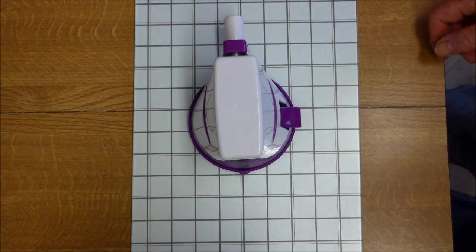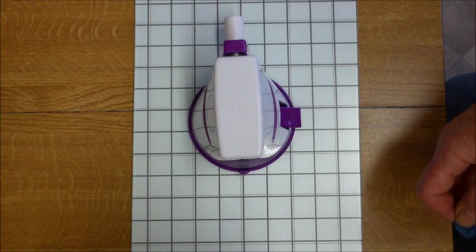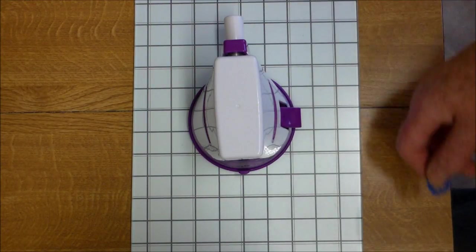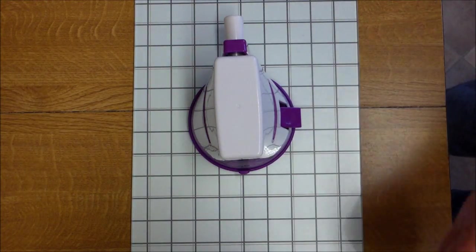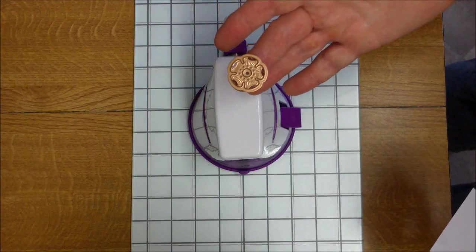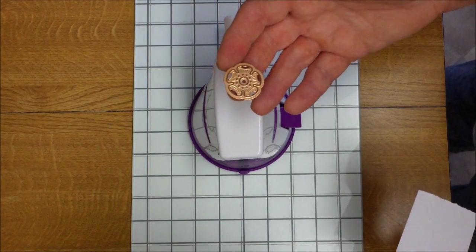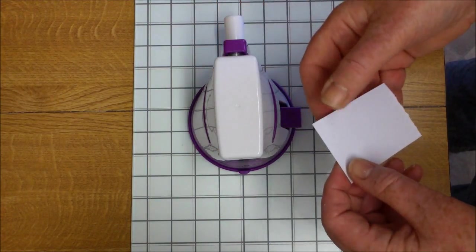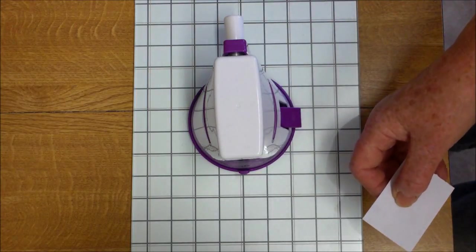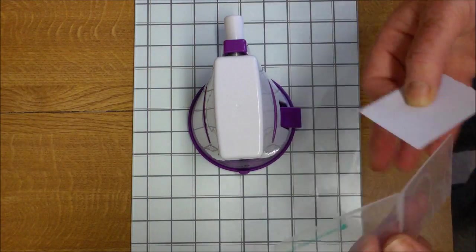Trying the machine with an embossing die. I've got this one, which is kind of a Tudor rose, so there's lots of detail in there. Again, putting the die into the folder.